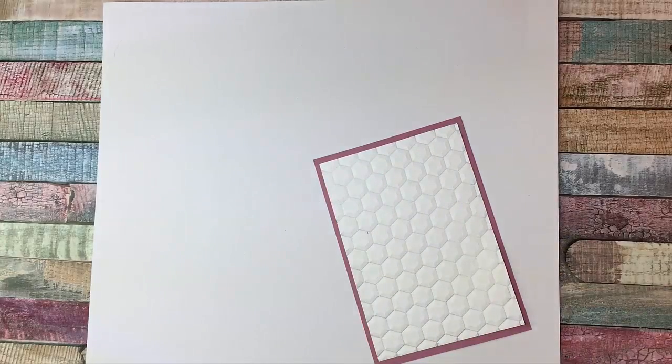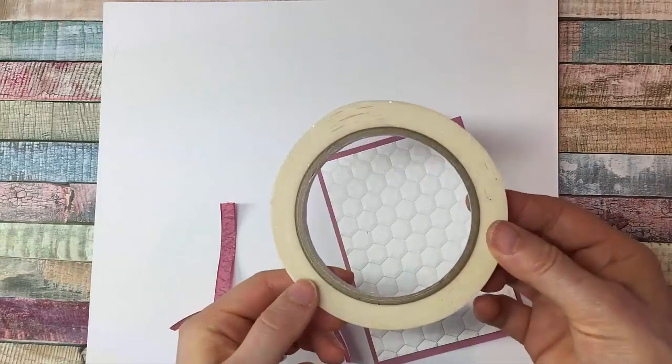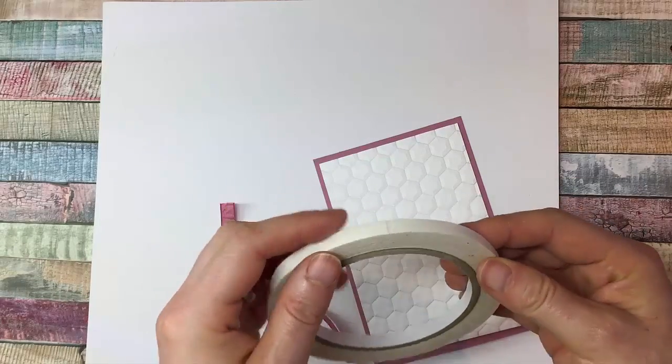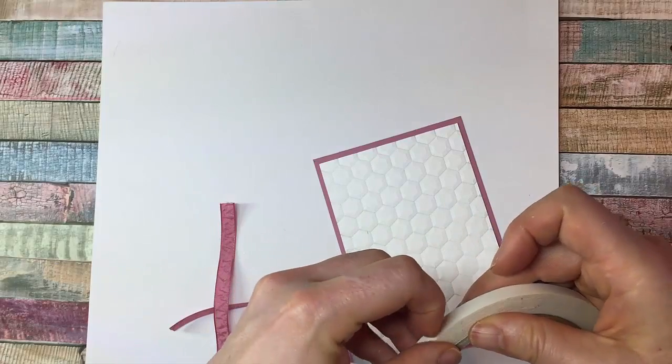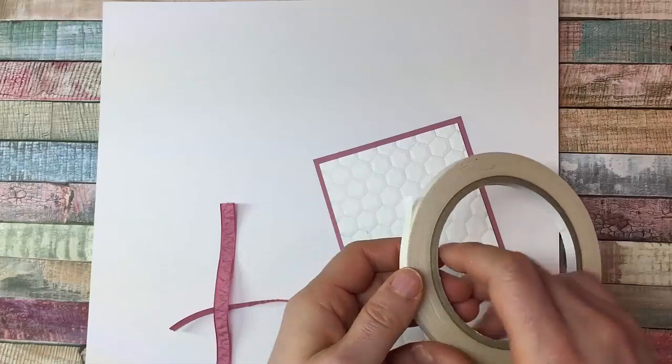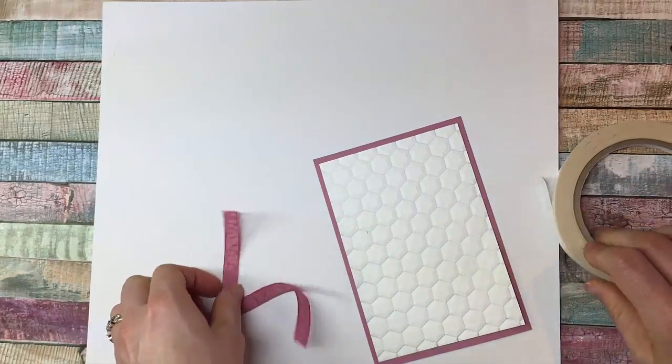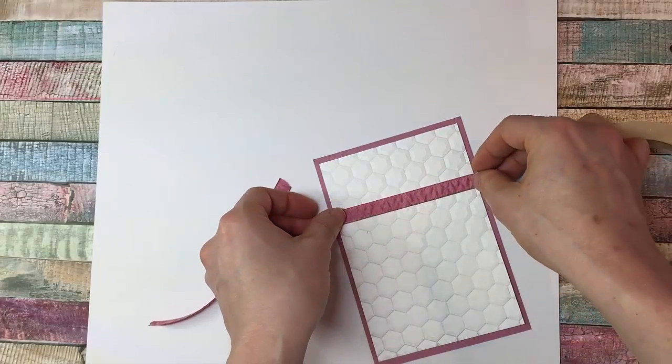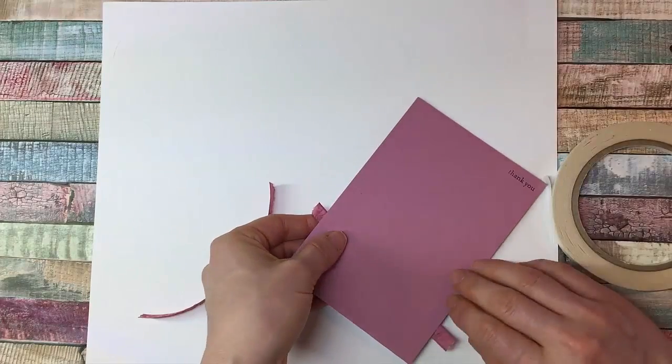Okay, the second thing I want to show you is our Tear and Tape. Now it looks like just your standard double-sided tape, but it's called Tear and Tape for a reason, because you don't need to use your scissors. The advantage there is one, it's faster, and two, you don't need to gum up your good scissors. That's one of my pet peeves—sticky scissors.